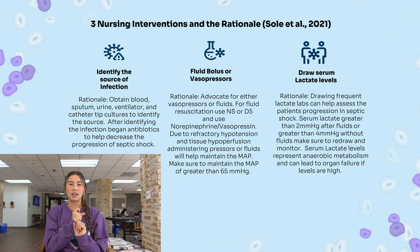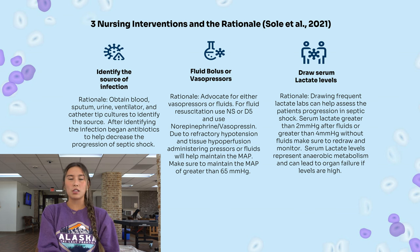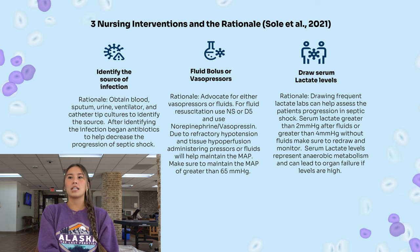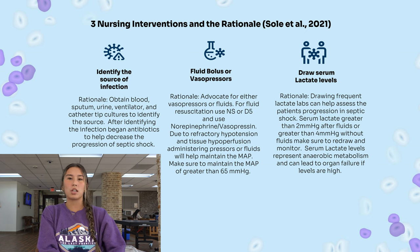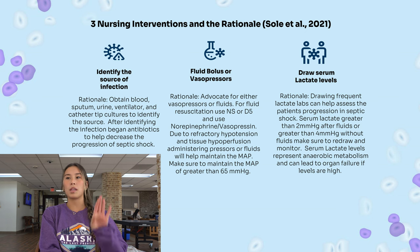Three nursing interventions: First, identify the source of infection — obtain blood, sputum, urine, ventilator, and catheter tip cultures. After identifying the source, start antibiotics to help decrease the progression. The next intervention is a fluid bolus or vasopressors — advocate for normal saline or D5, and norepinephrine and vasopressin. Due to refractory hypotension and tissue hypoperfusion, administering pressors or fluids will help maintain the MAP greater than 65. The last intervention is to draw serum lactate levels frequently to assess the patient's progression. Serum lactate greater than 2 after fluids or greater than 4 without fluids — redraw and monitor and hope they trend down. Serum lactate levels represent anaerobic metabolism and can lead to organ failure if levels are too high.